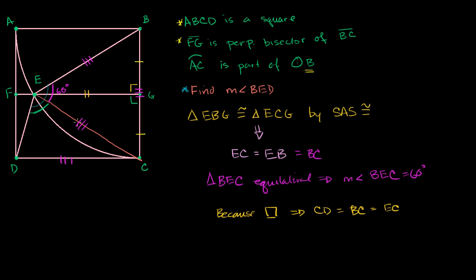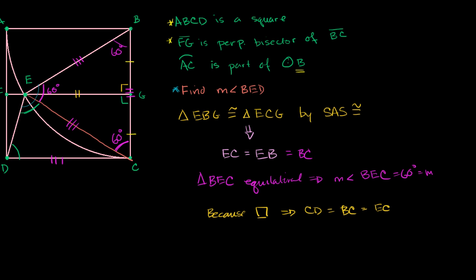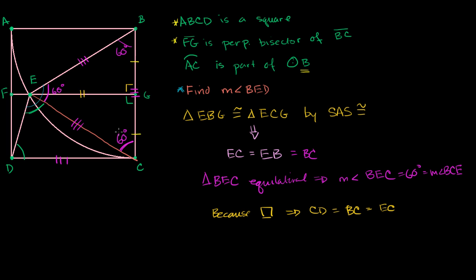For an isosceles triangle, the two base angles are congruent. So if we can figure out the top angle, we subtract from 180 and divide by 2. Since triangle BEC is equilateral, angle BCE equals 60 degrees. And since we're dealing with a square, the full angle at C is a right angle — 90 degrees. So the measure of angle ECD is 90 minus 60, which equals 30 degrees.